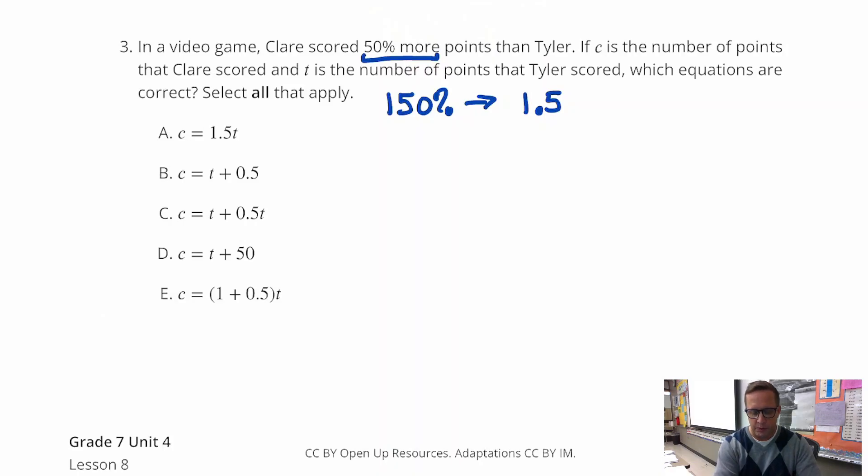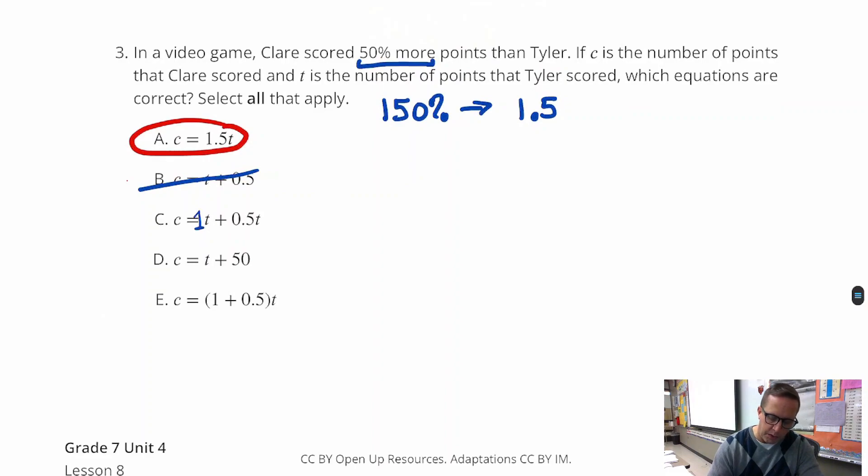Not everything is going to have a 1.5 in it, but let's see. Here, this one shows that. And then B is almost there. I mean, if this was, if that had a T on it, we can go somewhere with it. But that is not going to be viable. For C, that one works because when you add 1T plus 0.5T, you get 1.5T, right? Which is equivalent to A. So C works.